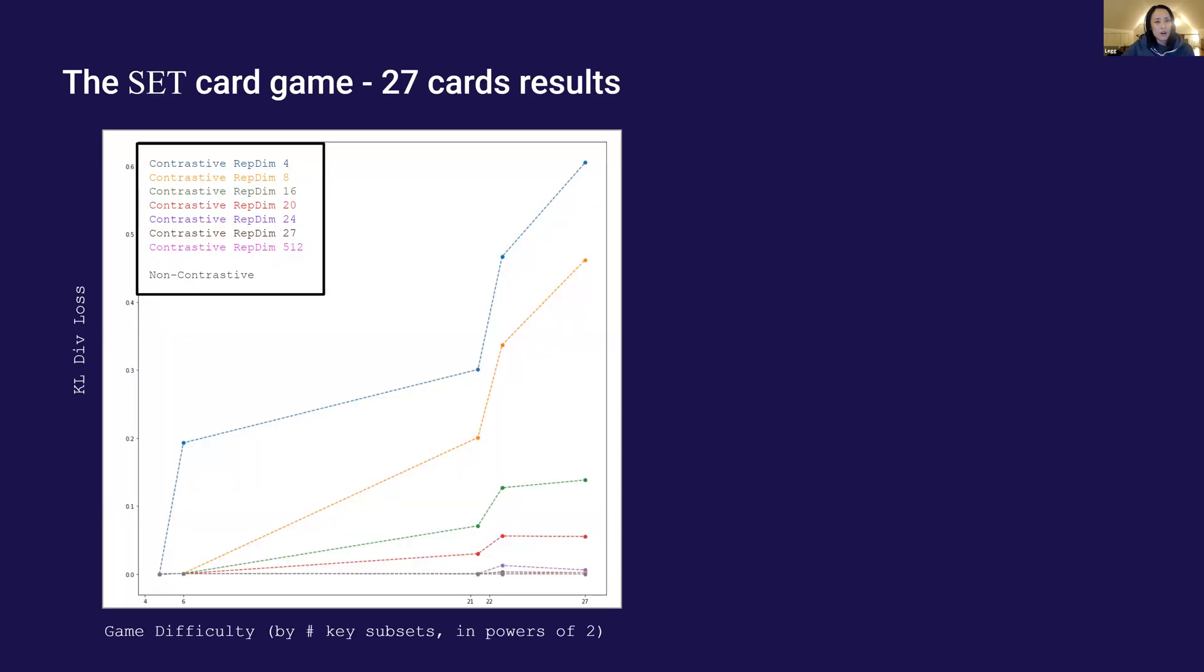Here's a results plot. On the y-axis, we have KL divergence loss. On the x-axis, we have those five games ordered from left to right with increasing levels of difficulty measured by the total number of key subsets the queries should separate in powers of 2. The first game is the original sets. It requires the queries to separate 2 to the power 4.57 subsets of keys. All the models did very well.